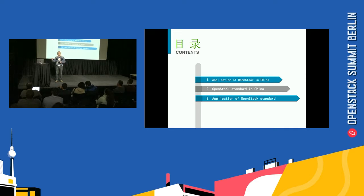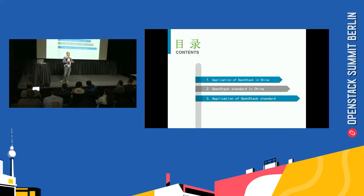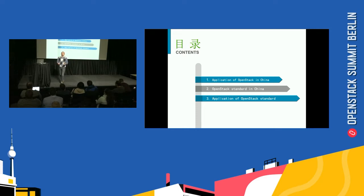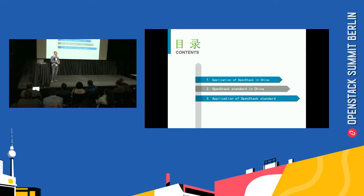For this reason, since 2012 we started to work on OpenStack and use OpenStack as the standard. Because OpenStack provides both the interface and the data model behind the interface. Another reason is that OpenStack is so popular — many industries, providers, and vendors use OpenStack and their products are based on it. It has become a common platform or ecosystem that most can use. This is why we finally chose OpenStack as the national standard for cloud computing in China.